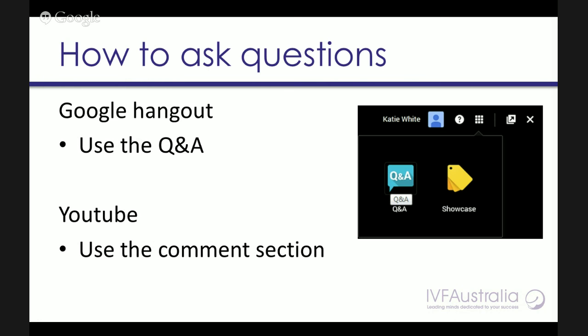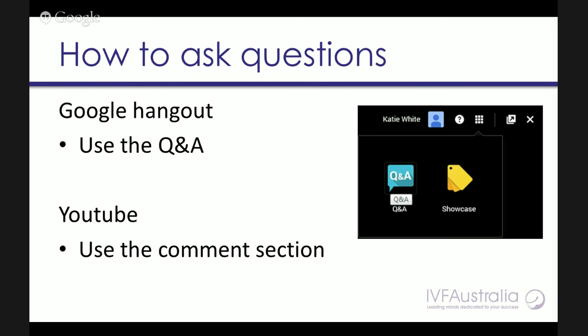To submit your questions, you can use the Google Hangout. You'll see a grid of squares on the top right-hand side of the hangout window. Click that and then click the Q&A button. This will open up questions and if you go down the right side at the bottom, there's a question window. Click 'ask a new question', type your question and click submit. If you're using YouTube, you can submit your questions below the video in the comment section. If we run out of time to answer your questions, feel free to send them along anyway and we'll get back to you.